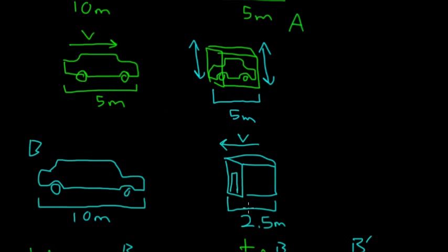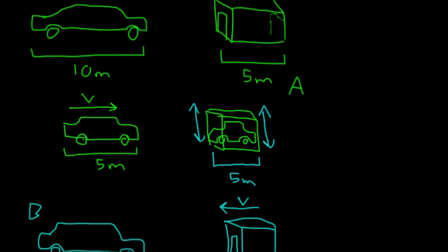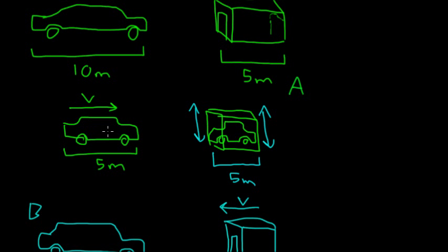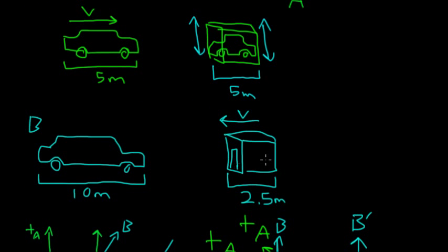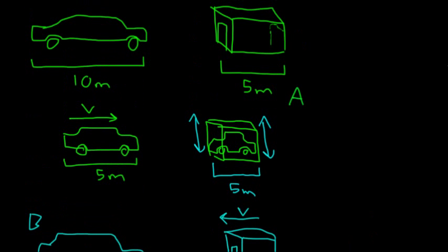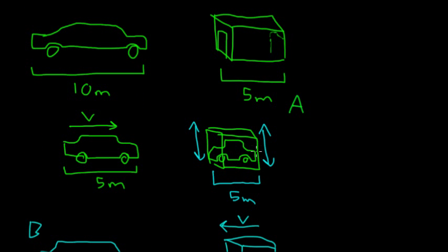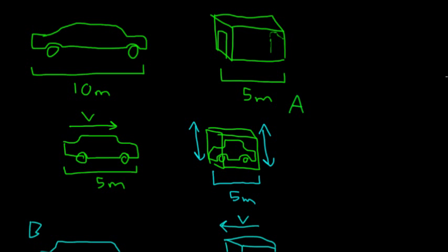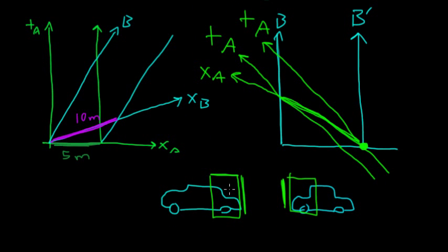Both observers are going to see this length contraction happen. A is going to see the moving car, the garage is going to see the moving car get smaller. But from the car's perspective, it's the garage that's going to get smaller. And we notice that from A's perspective, the front door closes right when the front bumper gets there, and the back door closes right when the back bumper gets there. The same things are happening here. In B's perspective, the back door closes right when the front of the car gets there, and the back door of the garage closes right when the back of the car gets there.